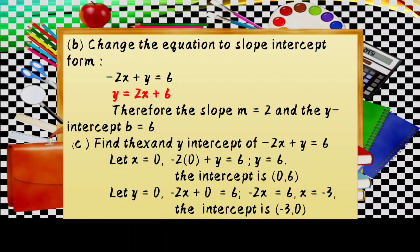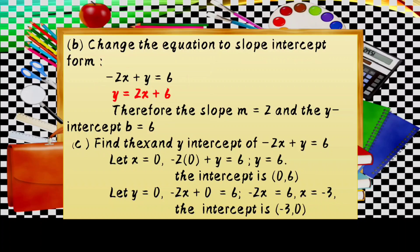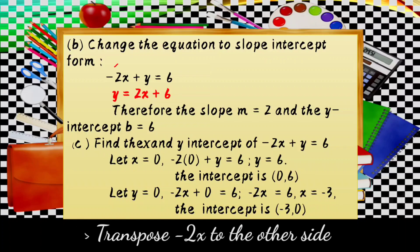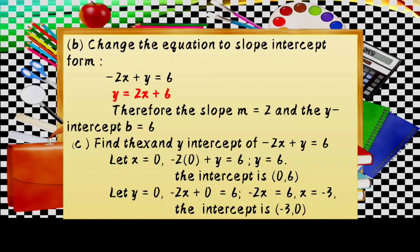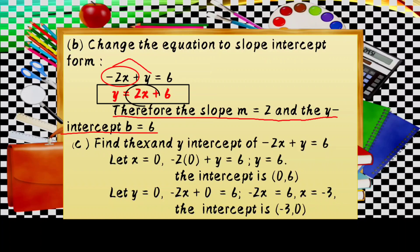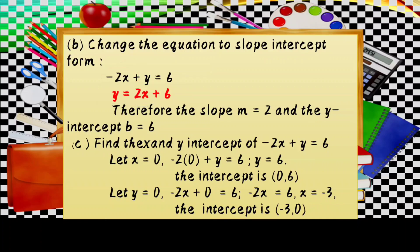Next, change the equation to slope-intercept form. Starting from negative 2x plus y equals 6, we transpose negative 2x to the other side, giving y equals 2x plus 6. The negative 2x becomes positive 2x when moved to the right side.